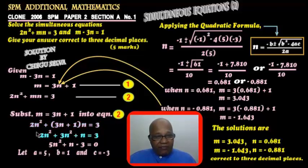Now we expand. We get 2n squared plus 3n squared plus n equals 3. So we get 5n squared plus n minus 3, when you bring the 3 to the left, equal to 0.